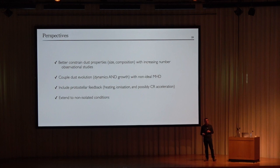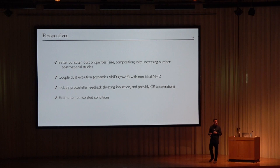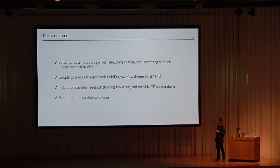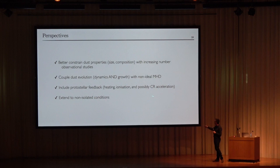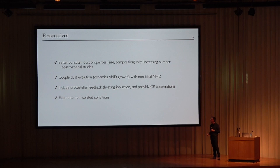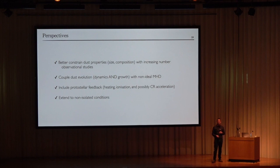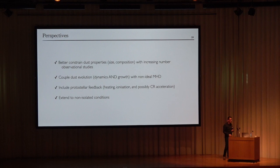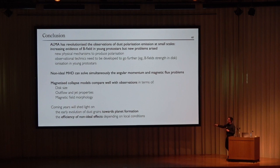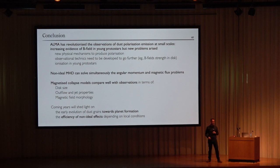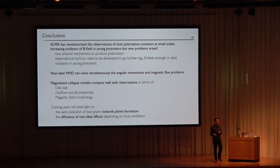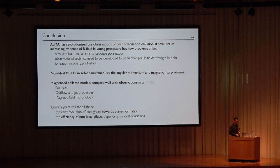To finish, I think in the next 10 years we will have better constraints on dust properties inside class 0 protostars to test whether dust can grow and drift very early on. Models should couple dust evolution with non-ideal MHD. Protostellar feedback — radiation heating the gas, increasing ionization, and possibly accelerating cosmic rays deep inside the collapsing protostar — should also be included. All the work I have presented considers isolated cores, but stars may form in clusters, so we need to extend this to non-isolated conditions. I believe the field is slowly drifting toward a scenario where stars and planets are forming concurrently. More to come in the next year. Thank you.